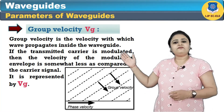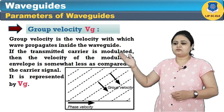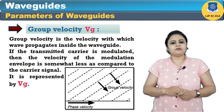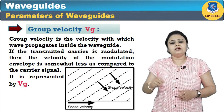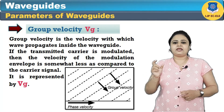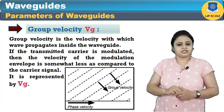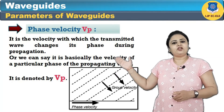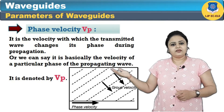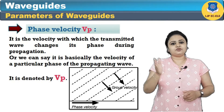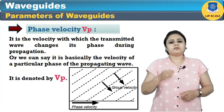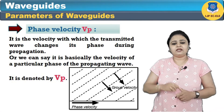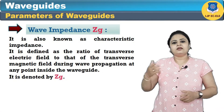The second parameter is group velocity — it is the velocity with which the wave propagates inside the waveguide. If the transmitted carrier is modulated, then the velocity of the modulation envelope is somewhat less as compared to the outer signal. This velocity of the envelope is termed as group velocity, indicated by Vg. The next term is phase velocity — it is the velocity with which the transmitted wave changes its phase during propagation, or we can say it is the velocity of a particular phase of the propagating wave, denoted by Vp.